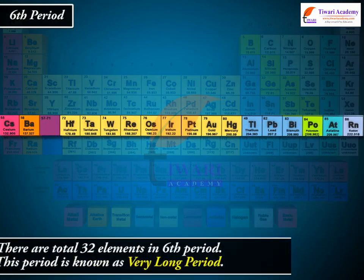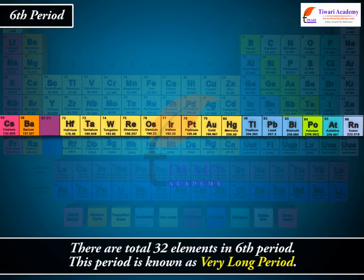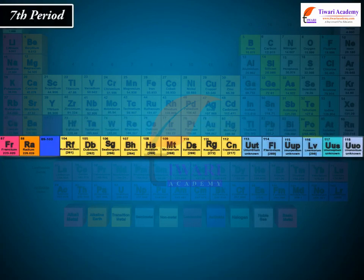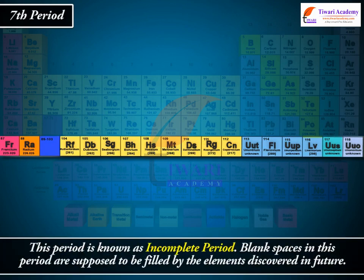There are a total of 32 elements in the 6th Period. This period is known as Very Long Period. The 7th period is known as Incomplete Period. Blank spaces in this period are supposed to be filled by elements discovered in the future.